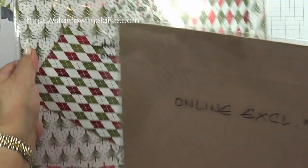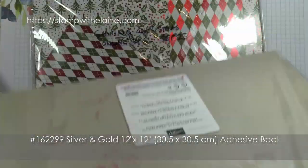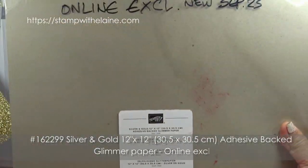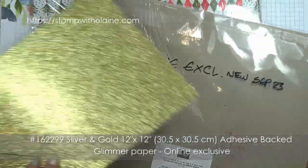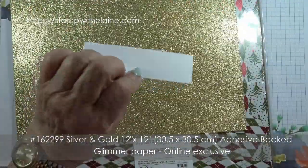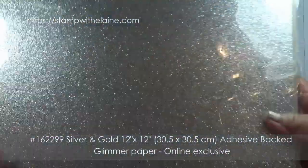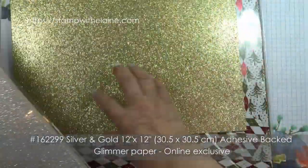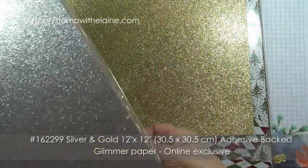I'm using two of the online exclusives. This one is the silver and gold 12x12 adhesive back glimmer paper. This is the paper and there's one sheet in silver and one sheet of 12x12 in gold.